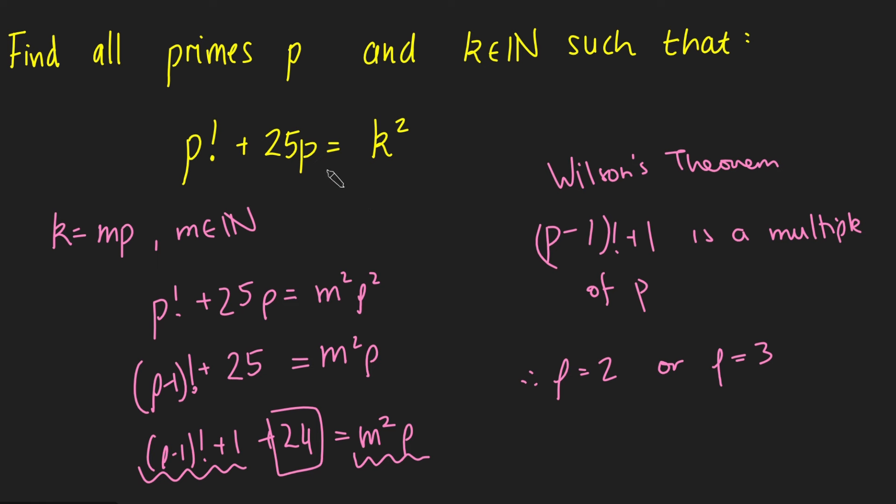If I plug in p is 2 into my initial equation, I get 2 factorial plus 25 times 2, which is 2 plus 50, which is 52. And that's not a square number.